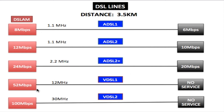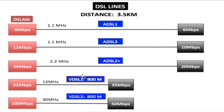At 52 megabits per second for VDSL 1, the frequency is 12 megahertz. Over a 3.5 kilometer line, there is no service at all — the frequency is so high it cannot travel that distance. For VDSL 2 at 100 megabits per second, the frequency is 30 megahertz, and it definitely wouldn't make it either. So in order for the VDSL lines to work, the distance must be shortened.